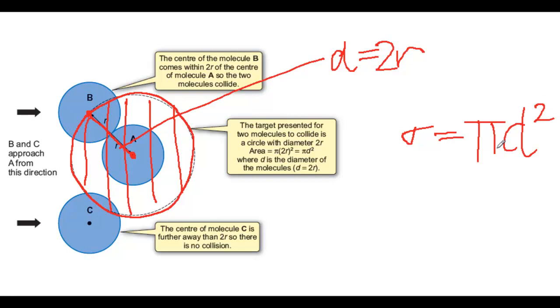It's easiest to think of collision cross-section as the area presented by molecule A for collision with the centre of molecule B.